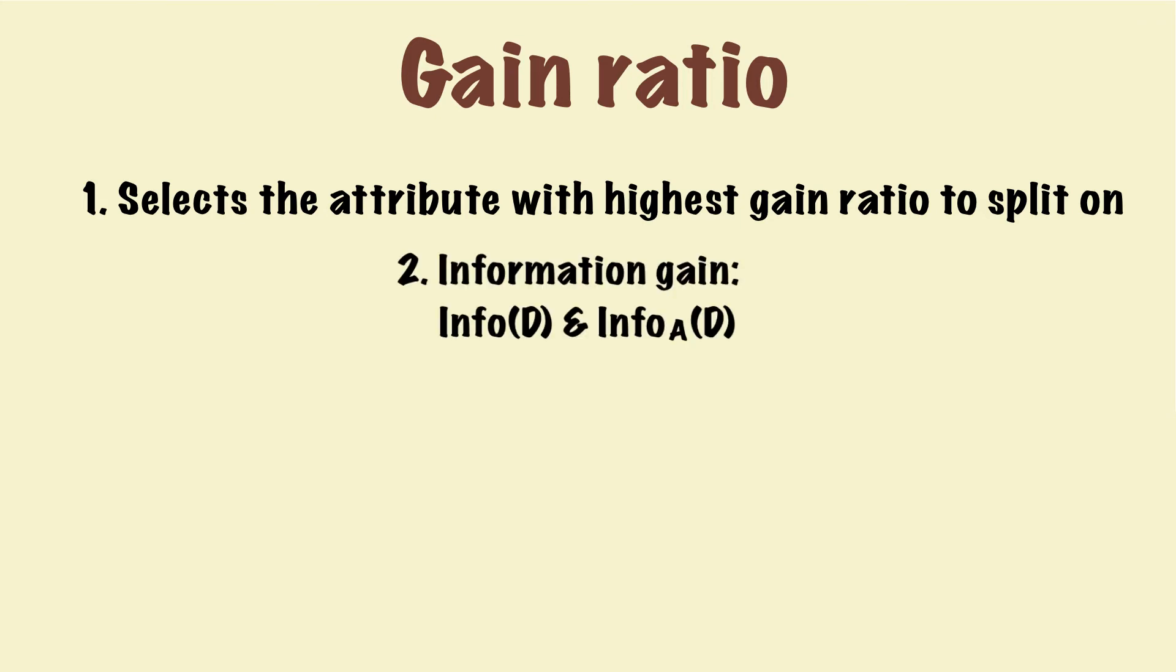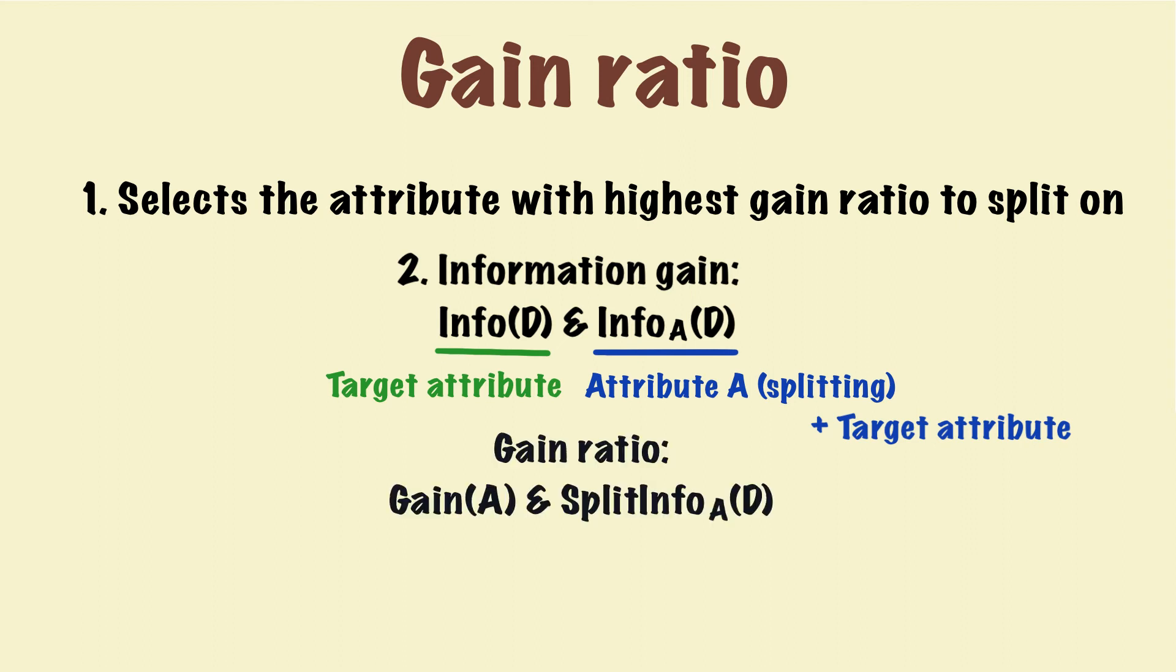Next, we should know which attributes we need to calculate certain variables. For information gain, we need to know the entropy of the database and the entropy of individual attributes. To calculate the entropy of the database, we use target attribute only. However, to calculate the entropy of individual attributes, we need both the individual attributes and the target attributes.